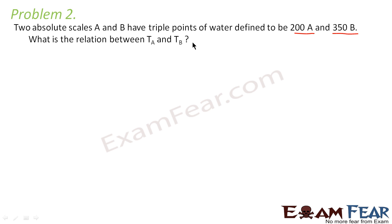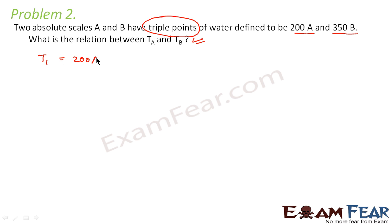What is the relation between TA and TB? Here we have two different temperature scales A and B, and the question involves the triple point of water. Triple point is the temperature at which all three states — solid, liquid, and gas — coexist. This question says the triple point on scale A is 200A and on scale B is 350B.